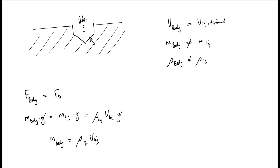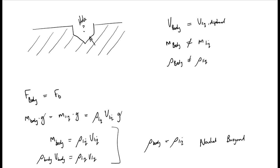Now, the mass of the body is also given by the density of the body multiplied by the volume of the body. From this, we can see: if the density of the body equals the density of the liquid, we have a neutral buoyant body. If the density of the body is smaller than the density of the liquid, then we have a buoyant body. And if the density of the body is bigger than the density of the liquid, then we have a sinker.